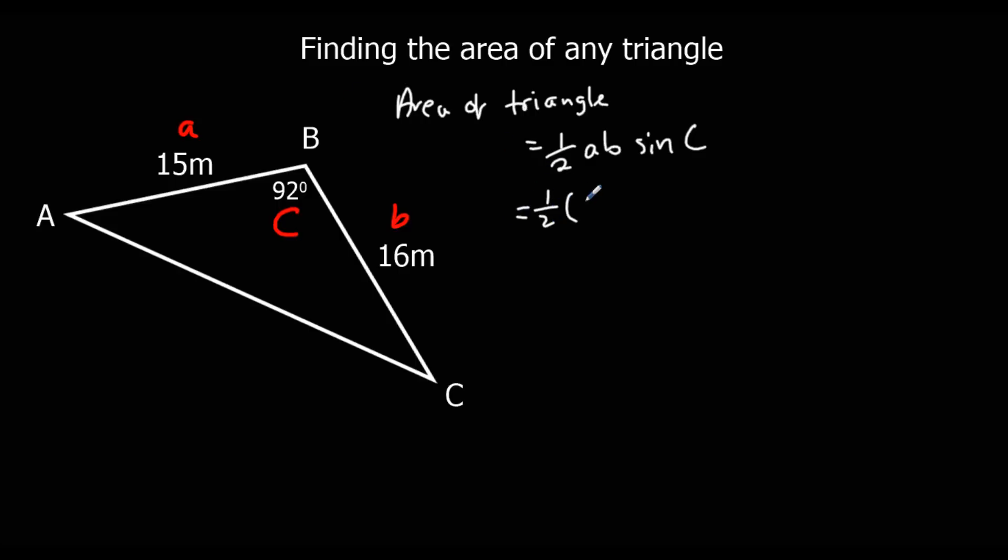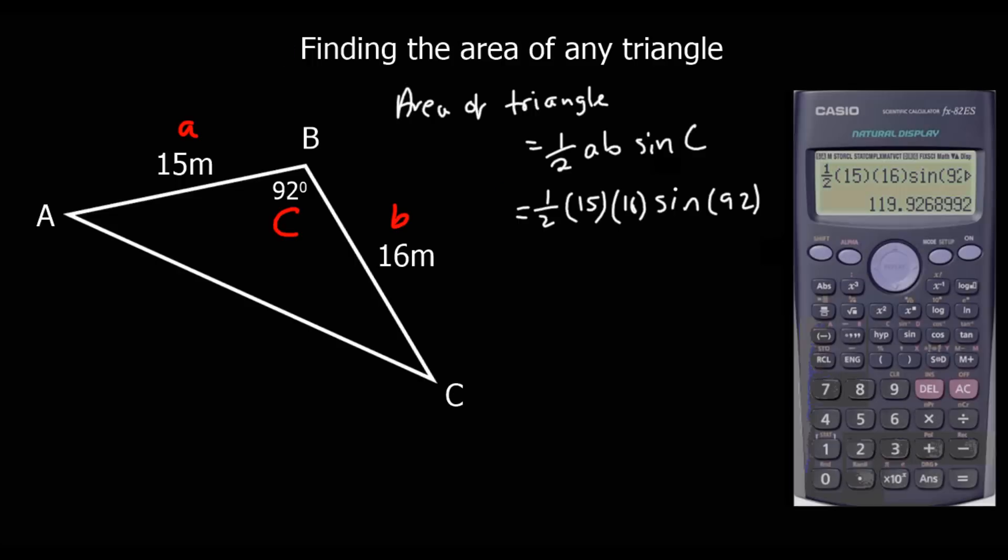So it's half times 15 times 16 sin 92. We just type this into the calculator and it gives us the area. So that is to three significant figures, 120 meters squared to three significant figures.